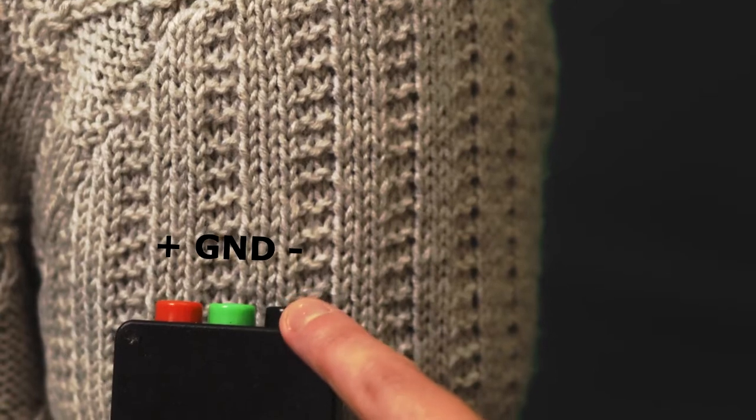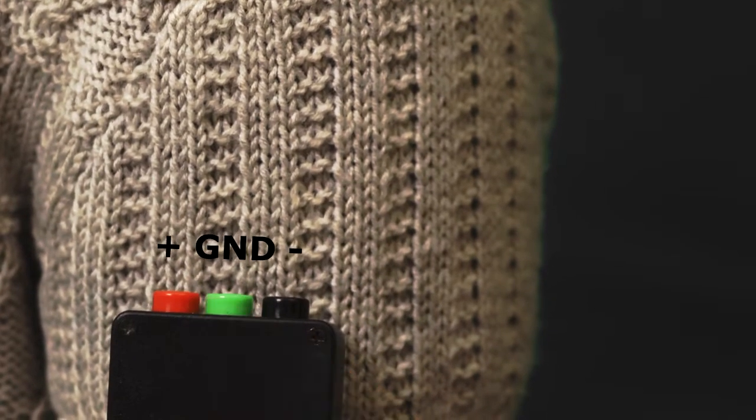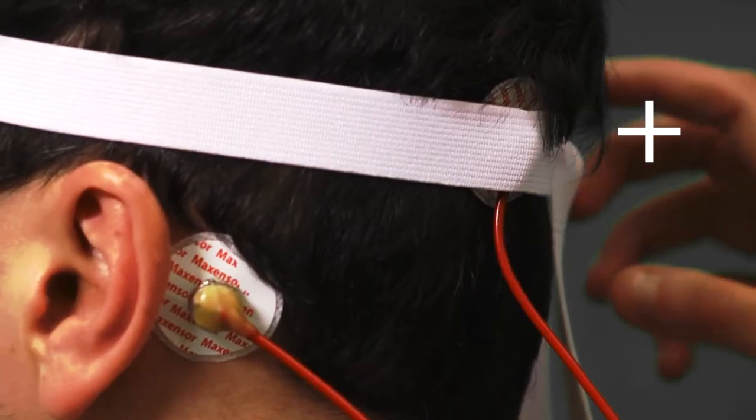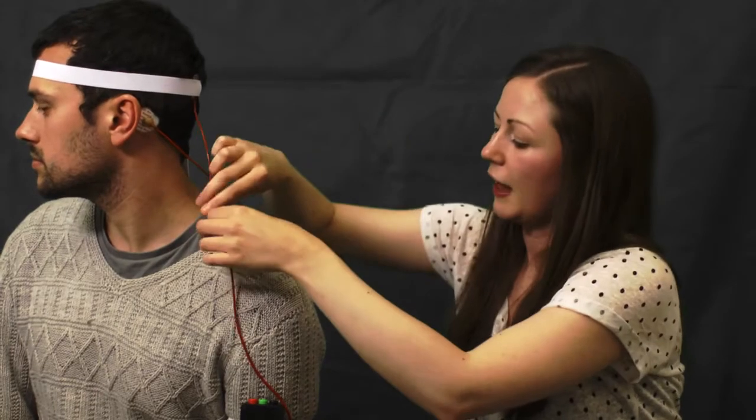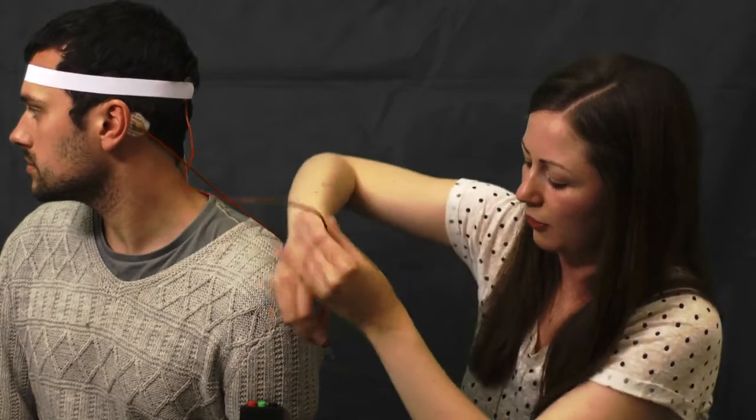Our amplifier has three different inputs: a positive, negative, and a ground. We're going to connect these to different areas of Jamie's head to record the EEG pattern. We'll start with our positive site, which is connected to the visual cortex. We're recording from Jamie's left-hand side. We already have the electrode in place, secured with this elastic bandage, and we're going to connect this to our positive.